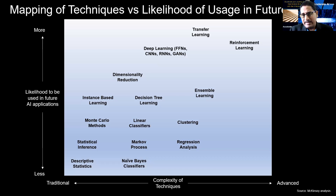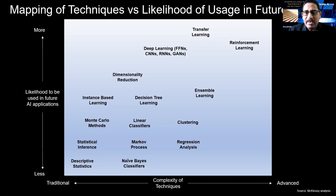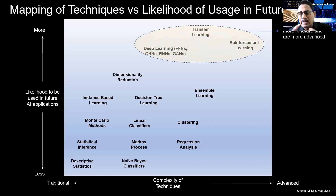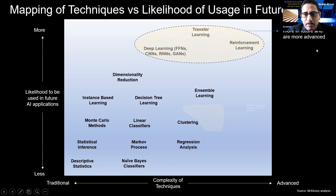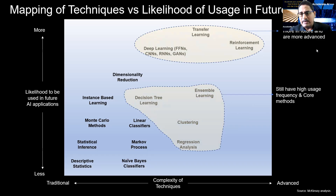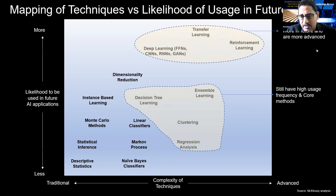In the previous slide, if you looked, we had an analysis by industry. We would also like to see what is the potential likelihood of usage and how they are improving. Transfer learning, reinforcement learning, and deep learning advanced techniques will be used a lot in some of these cases we are noticing going forward. At the same point of time, there's a lot of focus continuing in the high-usage sector and the core machine learning methods — simple classifiers, clustering, regression, and sample-based learning approaches.